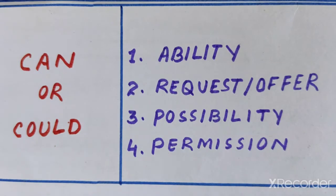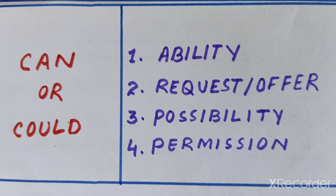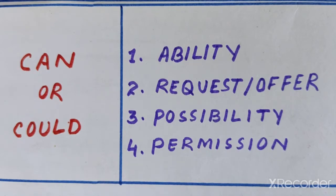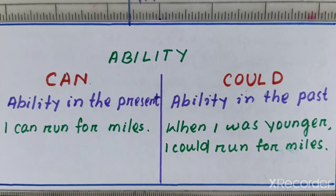Number one: ability. We use can or could to talk about skill or ability. Number two: request and offer. We use can or could to request someone or to offer someone something. Number three: possibility. We can use can or could when certain things are possible or impossible. And number four is permission. We use this to ask for and give permission. To clarify it, let's understand each of these individually.